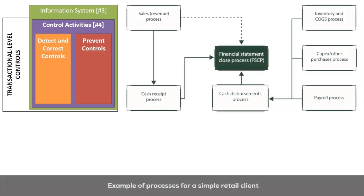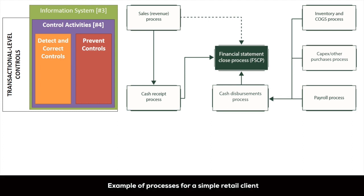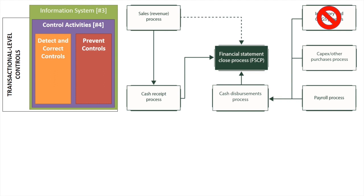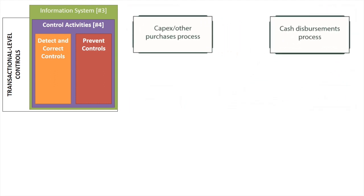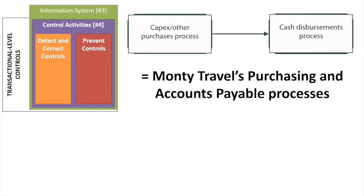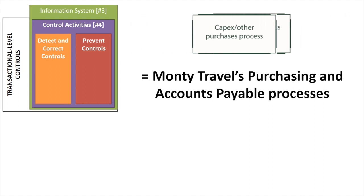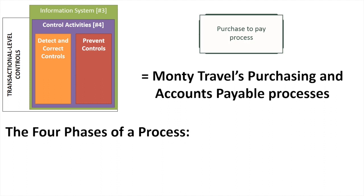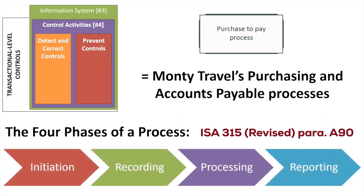Here is what an auditor would expect to see for a simple retail client. For the most part, this is consistent with what we can expect for Monty Travel, with the inventory and costs process being the main exception. For this video, we'll look at the purchases and cash disbursement processes. Since purchases feeds into accounts payable, in real life this is often treated together as a single large purchase to pay process. We'll start by understanding how transactions move through the four different phases of the purchase to pay process. You'll need to be across all this before you can start understanding Monty Travel's purchase to pay process. If you need to, just rewind and watch this video again. Otherwise, stay tuned and follow me into part two.